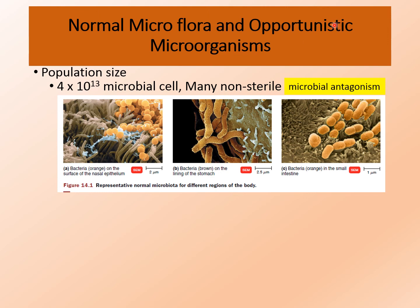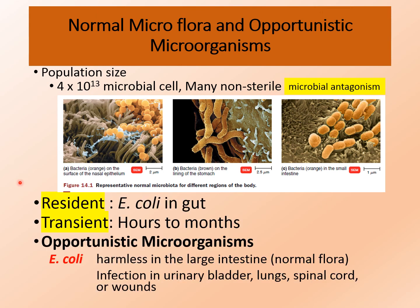Microbes can only colonize body sites that can supply appropriate nutrients, which may be derived from dead cells, food in the gastrointestinal tract, secretions, and excretory products of cells and substances in body fluids. There are two types of normal flora in our body: resident and transient. Resident microflora are those which are permanently present at a specific location for a very long period of time, while transient flora can last for hours to months.